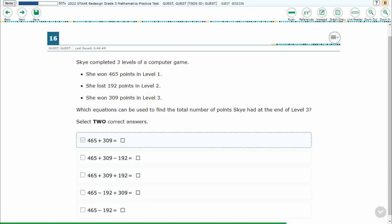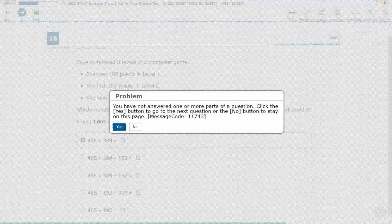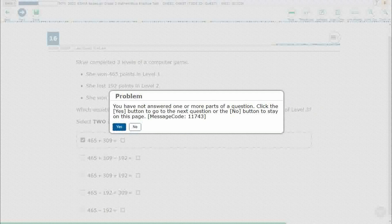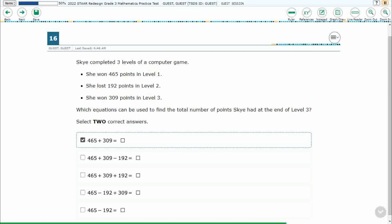Watch what happens if I just select one and try to move on. An error message is going to pop up and say you haven't answered the whole problem, and we'll let you move on if you say yes, but we want to say no. So this is two points. If you get one of them correct, you just get one point. If none of them correct, you get no points, and there's five options here.